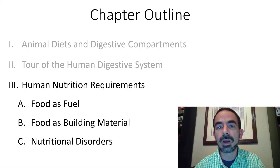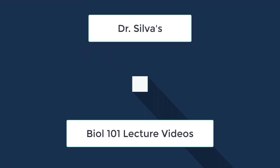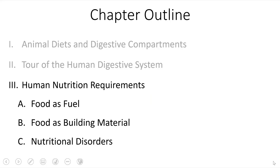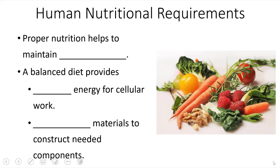What are the nutritional requirements for a human? Human nutritional requirements allow our body to maintain homeostasis. In fact, the main function of every organ system in our body, other than our reproductive system, is to help our body maintain homeostasis.